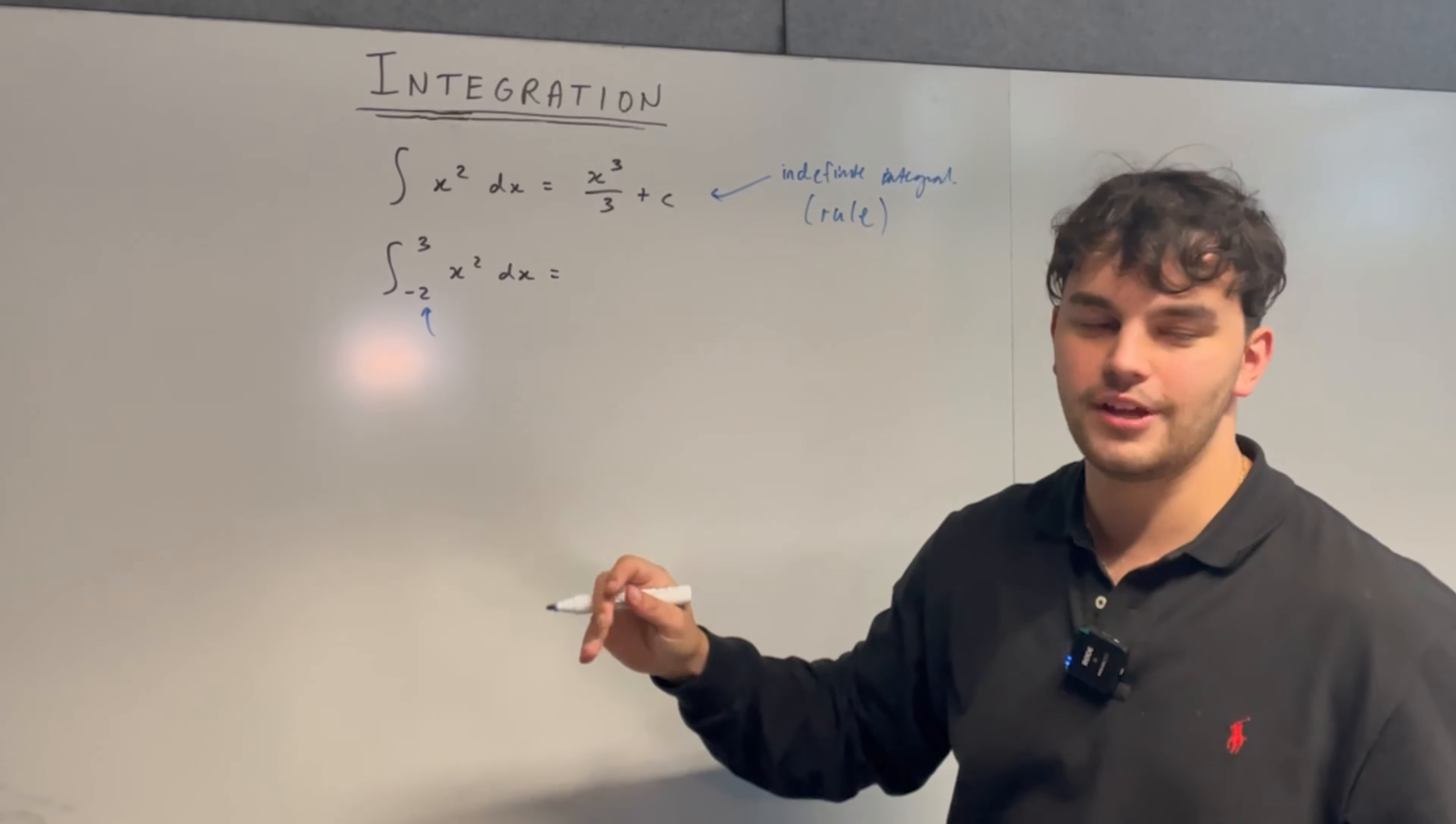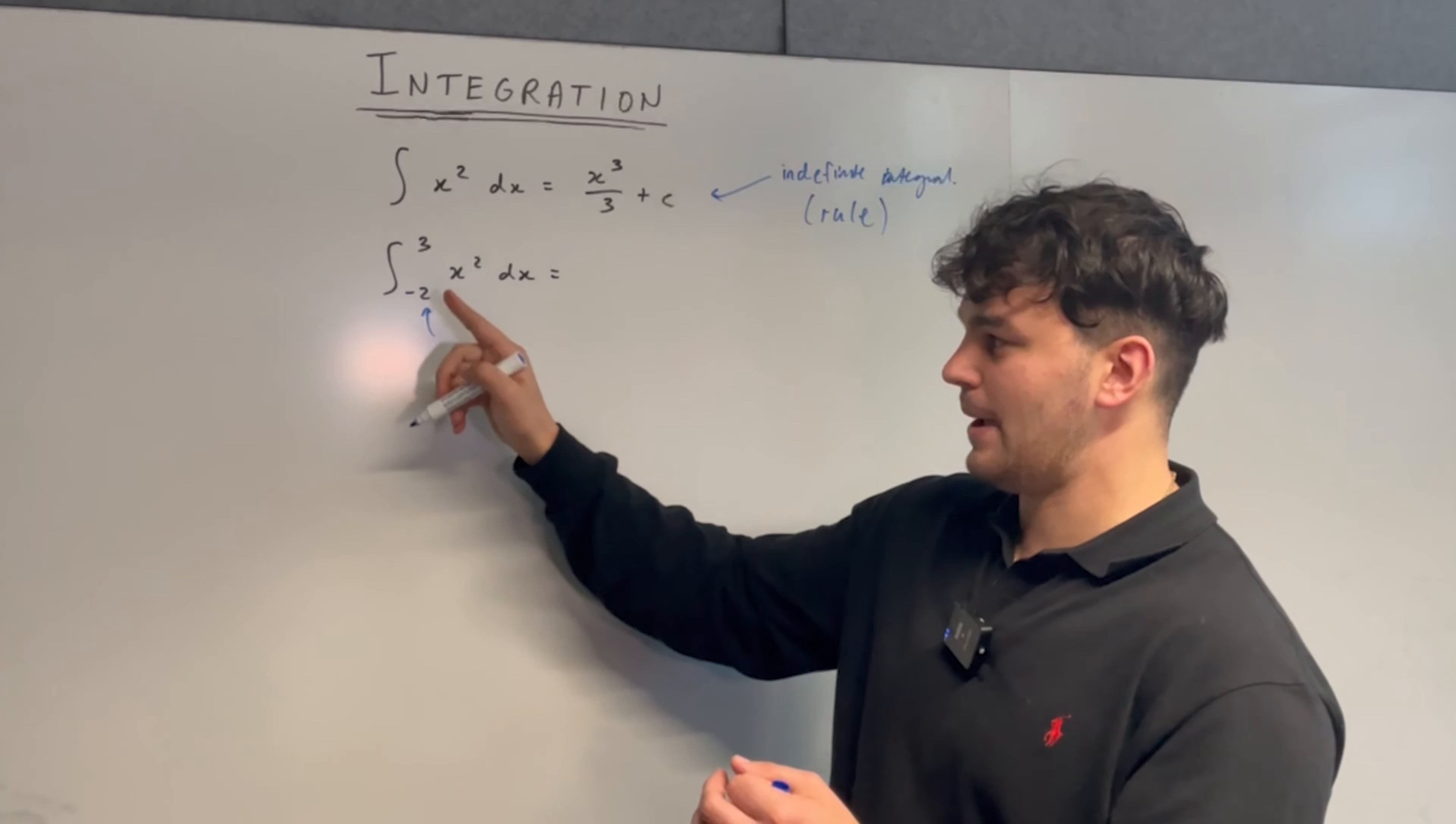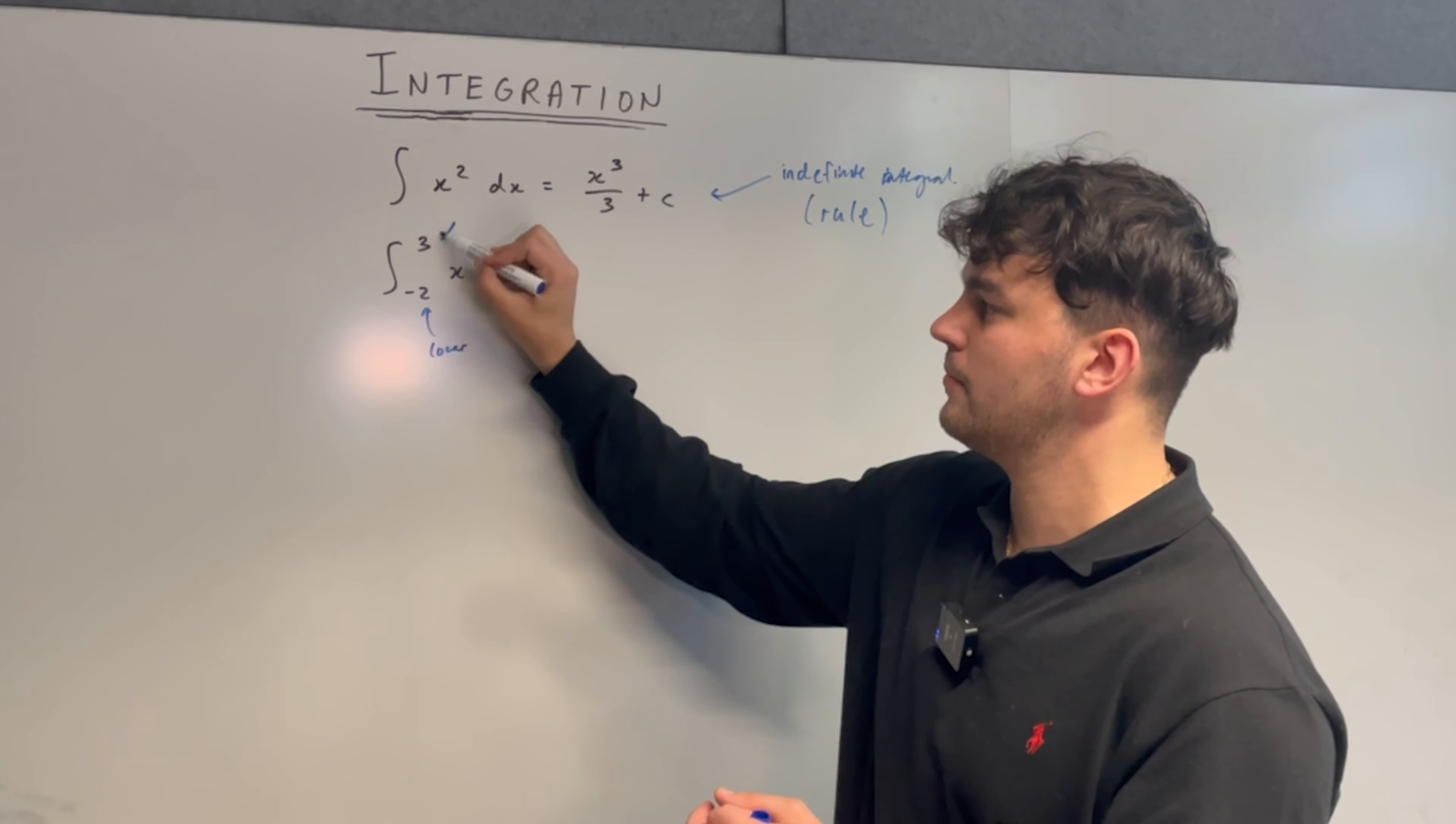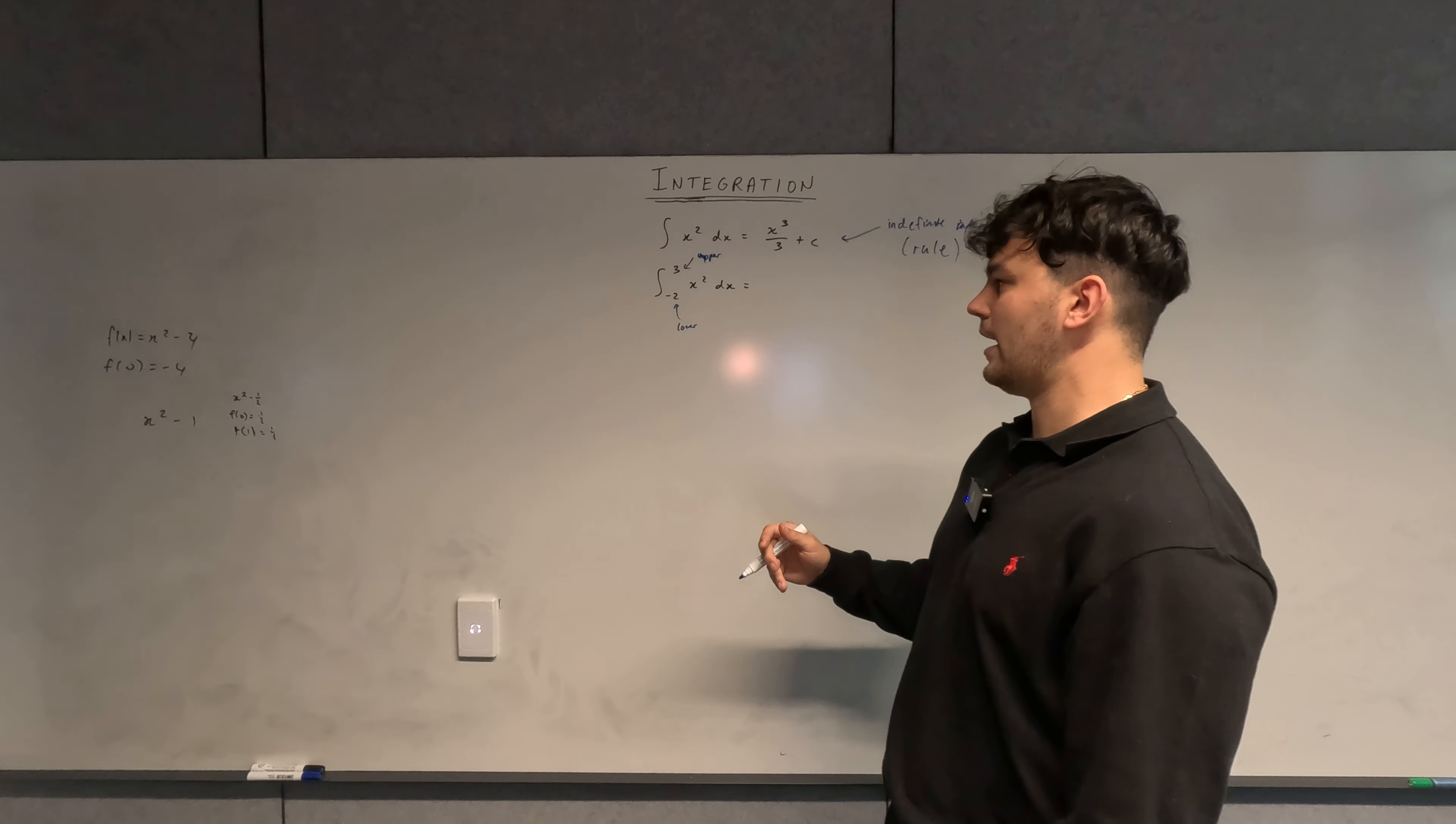So these are called, I mean the technical term—I've never heard any other student call it this—but it's called integrands. But you don't have to know that, you just think about it as the lower bound and the upper bound. This is the lower bound obviously because it's at the bottom, this one is the upper bound. So you're substituting the upper bound and then you minus the substitution of the bottom bound.